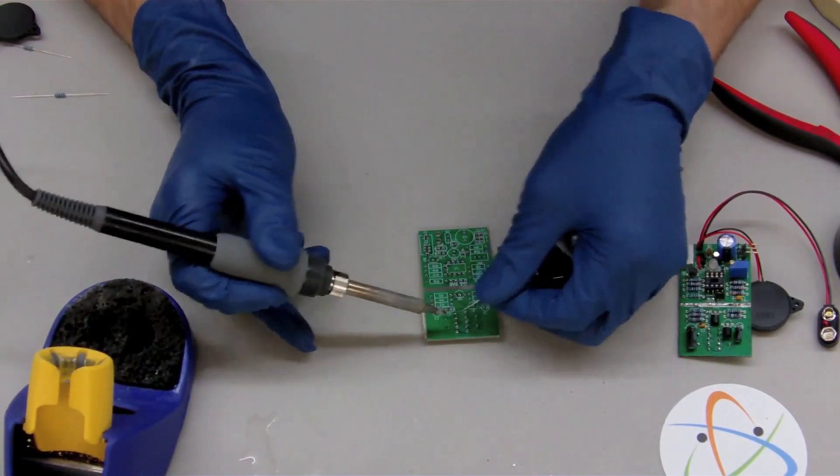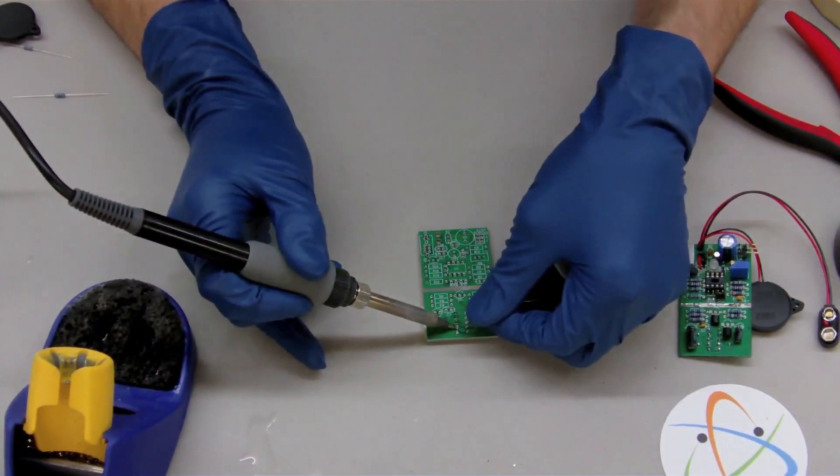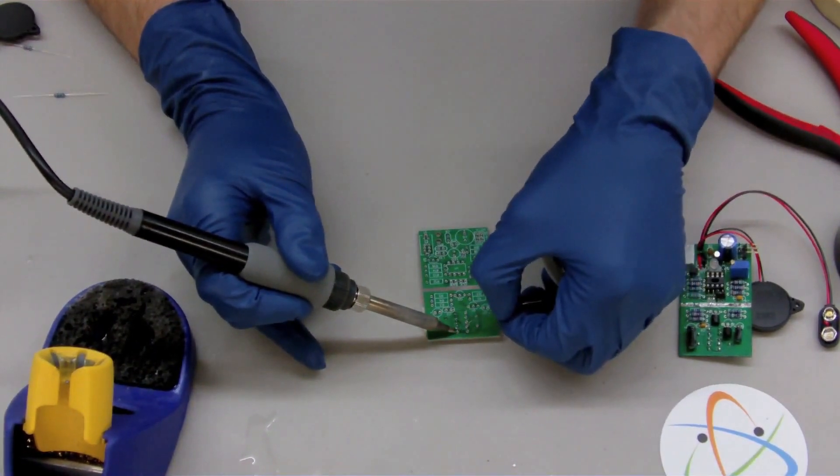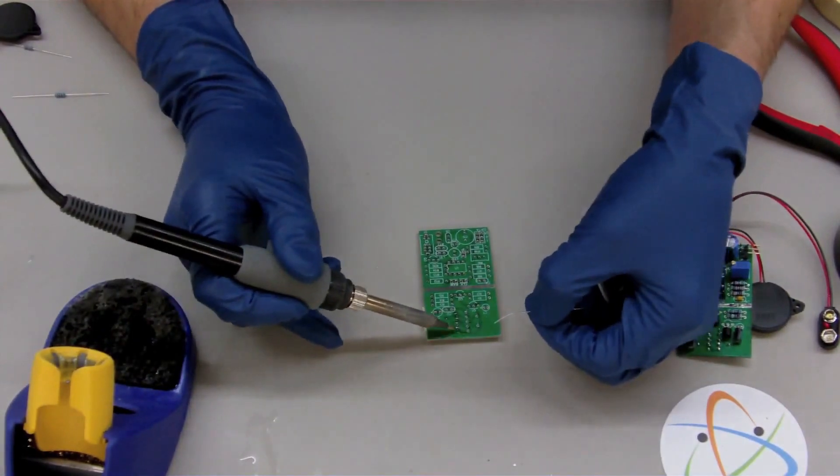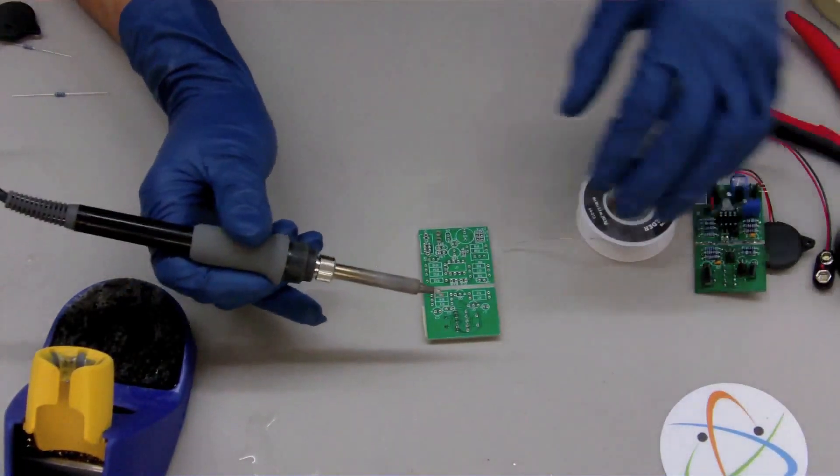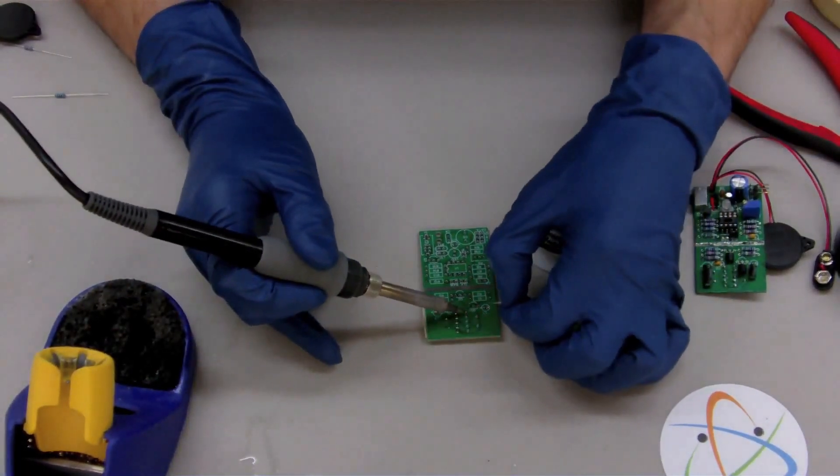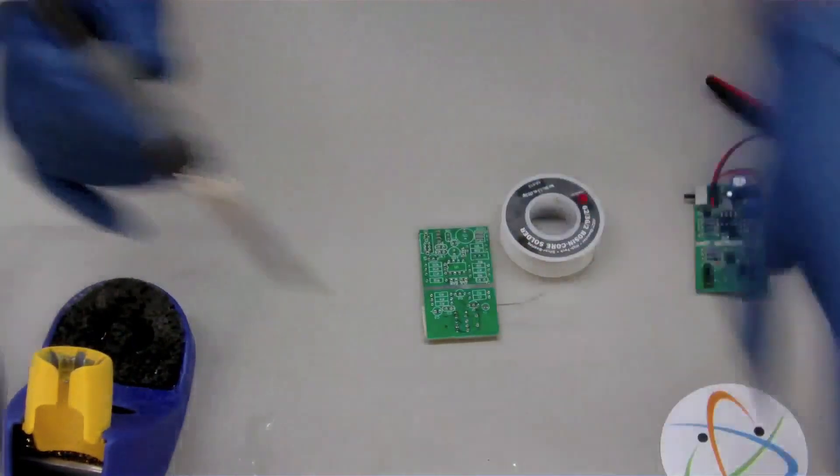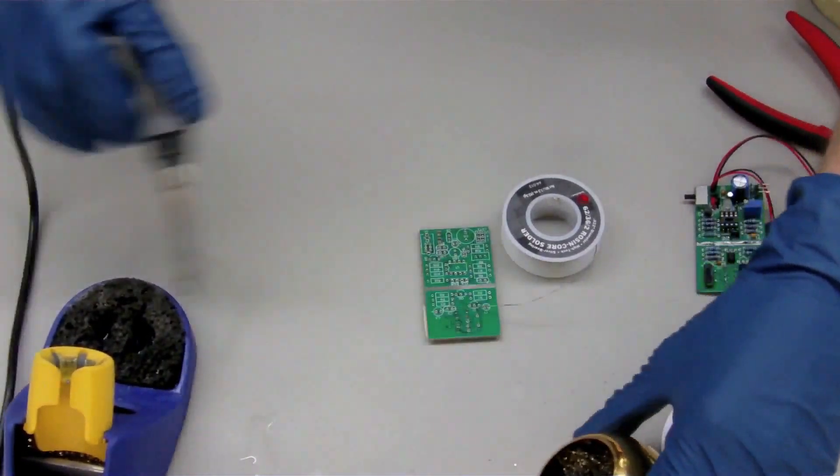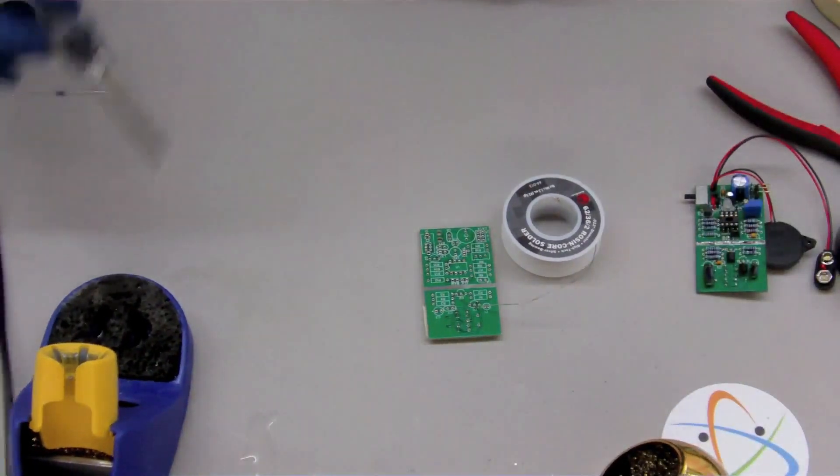You also want to apply the solder to the opposite side of the pin. So I've soldered half of them now, and then every once in a while, make sure to clean your tip with your sponge or your solder ball.